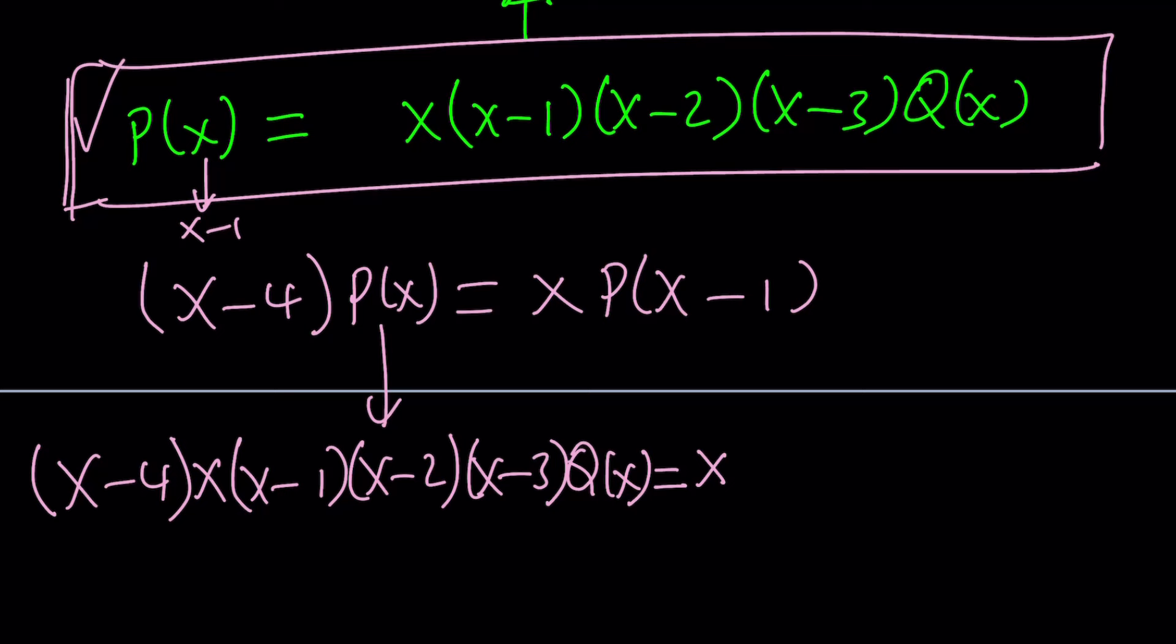P of X minus 1 is going to be X minus 1 times X minus 1 minus 1, which is X minus 2, and then X minus 3, and then X minus 4, and finally Q of X minus 1. There you go. We replace everything, all the X's with X minus 1.